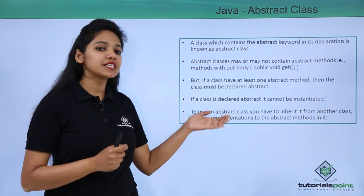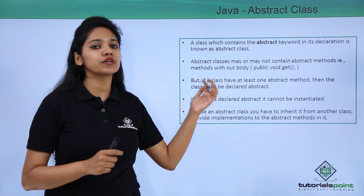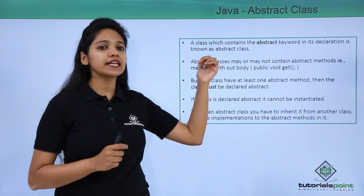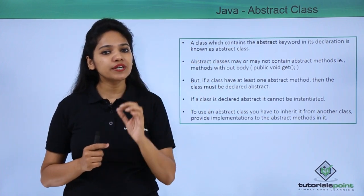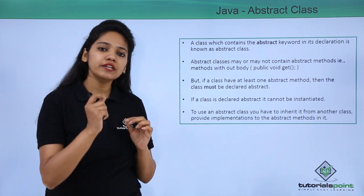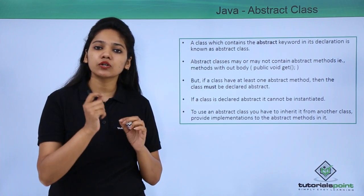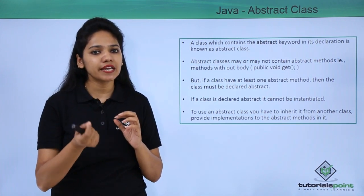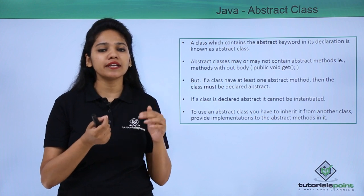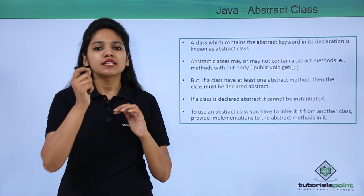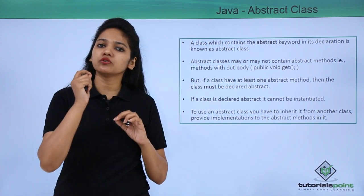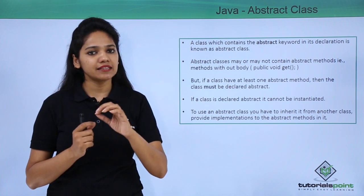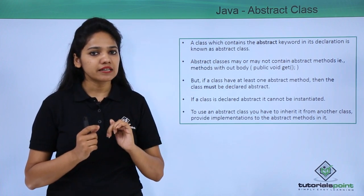To create an abstract class, you need to use the keyword 'abstract'. It is similar to how you create a normal class — you write the class and class name — but here you add the abstract keyword before the class keyword and then the class name.